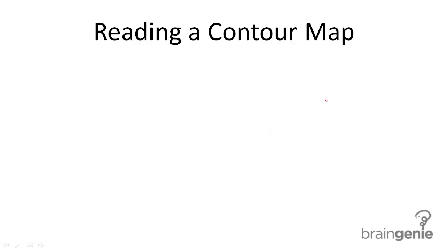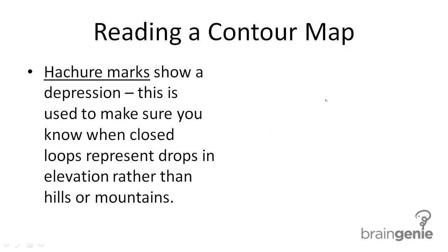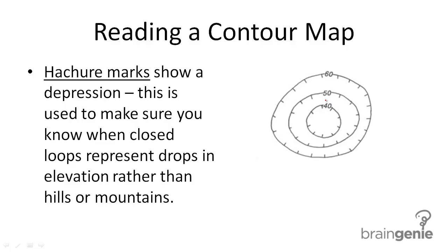Hatcher marks show a depression. This is used to make sure you know when closed loops represent drops in elevation rather than mountains. So with these little dashes on the lines — or hatcher marks — that means that it's actually going to look like a depression instead of a mountain.